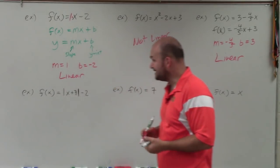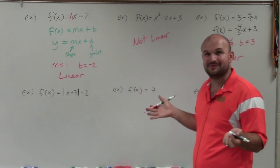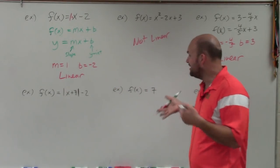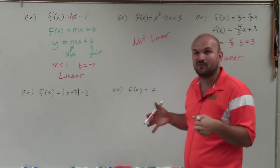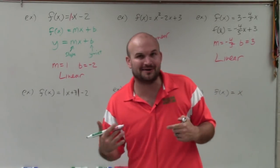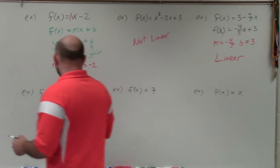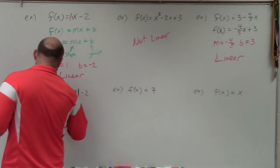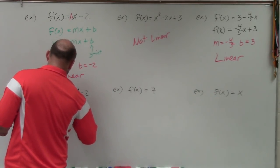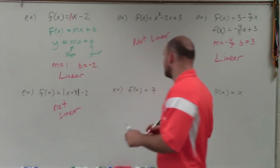The next one, I have f of x with an absolute value symbol — absolute value of x plus 7, minus 2. I didn't say anything about absolute values when talking about what's linear or not. That's some random stuff — not linear. It needs to be in the form mx plus b.